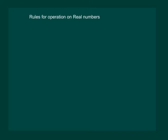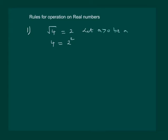Rule 1 states that for a number greater than 0, if root 4 is equal to 2, then we can write 4 is equal to 2 squared. That means we can remove the square root sign by squaring the other side of the equality. In general, let a greater than 0 be a real number. Then if under root of a is equal to b, that means a is equal to b squared.